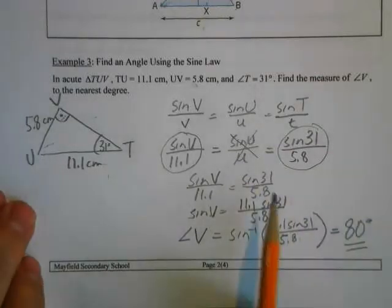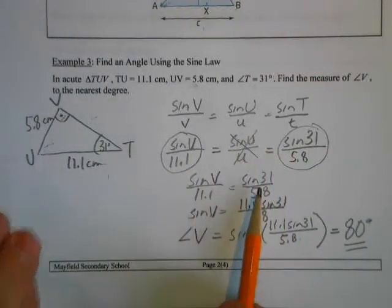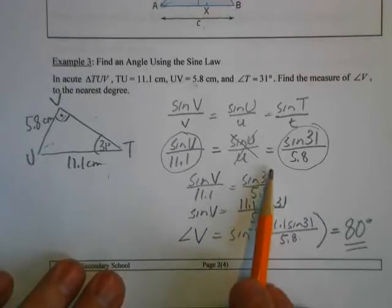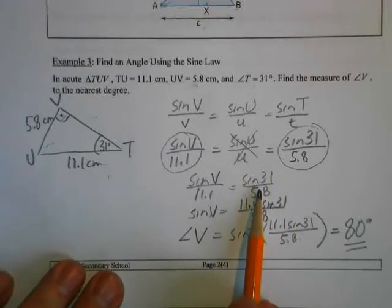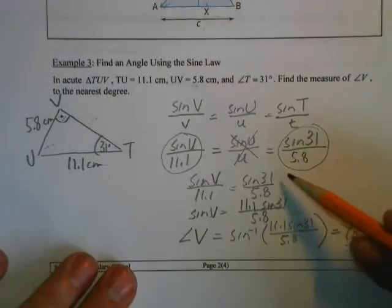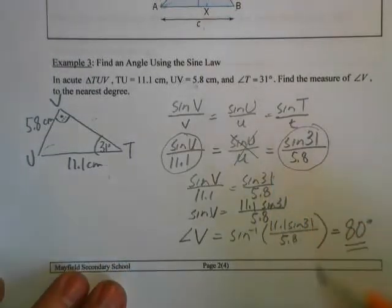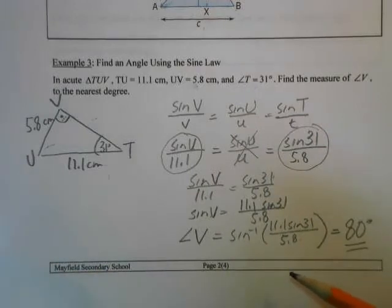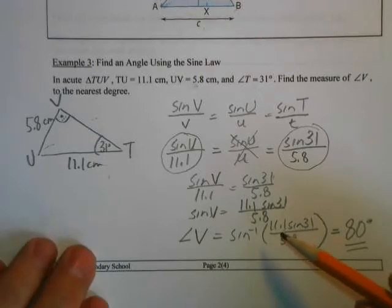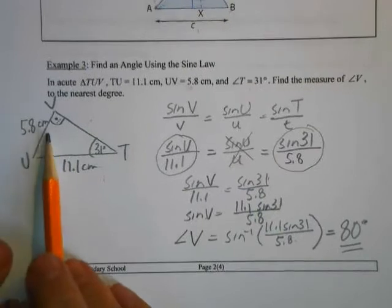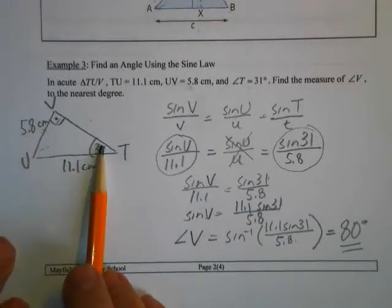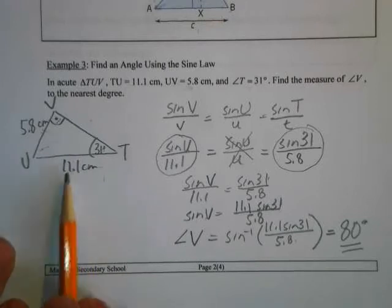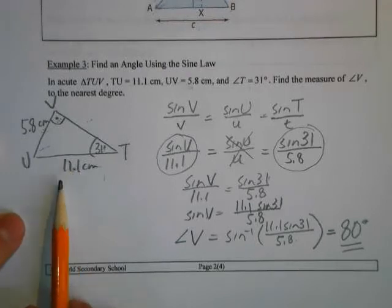One key thing about sine law: you have to have one complete ratio — an angle and its opposite side both known. When deciding whether you can use sine law, ask yourself: do I know an angle and its opposite side? You also need one other piece of information, either another side or another angle. In this case, we knew angle T and side t (5.8), plus side v (11.1), so we could use sine law.